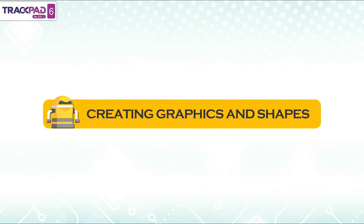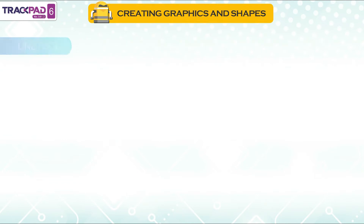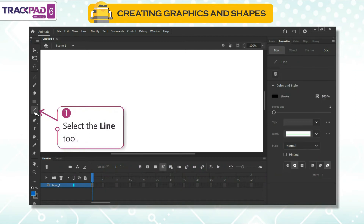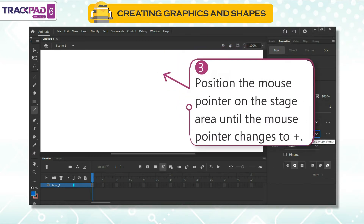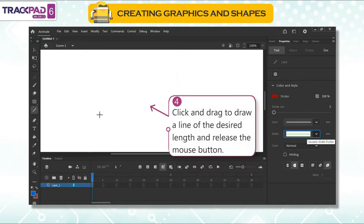Creating graphics and shapes. Let us learn how to create different graphics and shapes using different kinds of tools. Line tool: the line tool is used to draw straight lines. To draw a straight line, follow the given steps. First, select the line tool. Second, select stroke color, style, width and scale in the properties inspector. Third, position the mouse pointer on the stage area until the mouse pointer changes to a plus. Fourth, click and drag to draw a line of the desired length and release the mouse button.